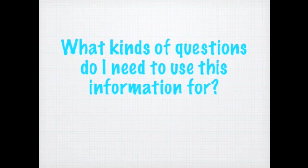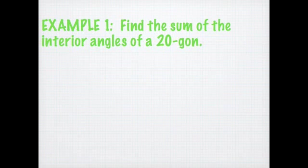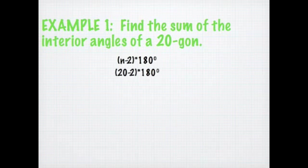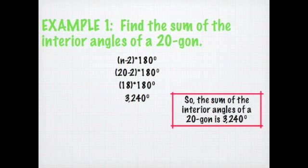What kinds of questions do I need to use this information for? We're going to do a couple examples just like the ones you'll need to do on your assignments this week. Example one: find the sum of the interior angles of a 20-gon. We use the formula (n − 2) × 180 and put 20 in for n. So 20 − 2 times 180: first, 20 − 2 is 18, and 18 times 180 is 3,240 degrees. So the sum of the interior angles of a 20-gon is 3,240.